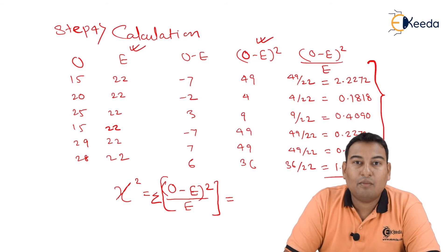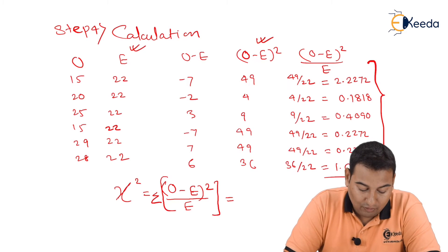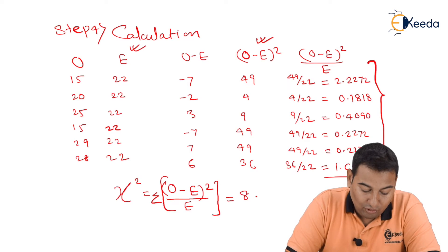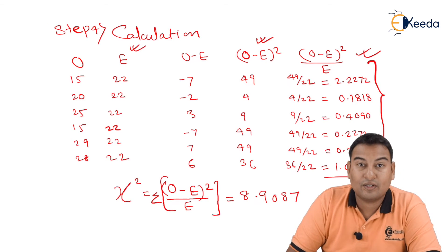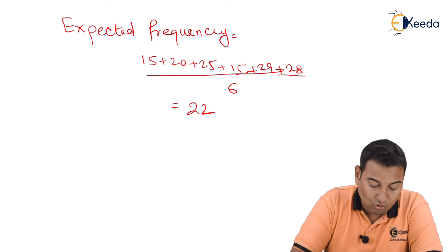So if I add everything I'll get the value of chi-square, which is coming out to be 8.9087. So add this, you will get this result.